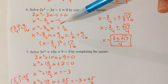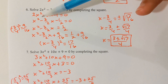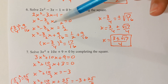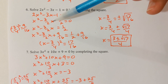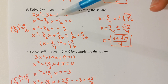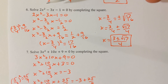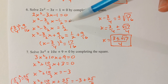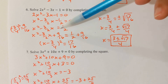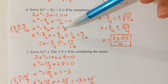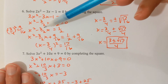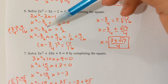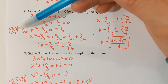I see sometimes where students won't get a 1 in front of the x² term — they'll go right into half of the number in front of x. Don't do that, it will lead to the wrong answer because you weren't set up to complete the square yet. We need a 1 in front of x² first, and then bring the constant over to the right. Half of negative 3/2 is negative 3/4.